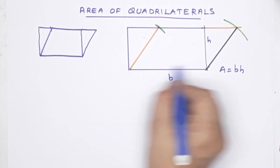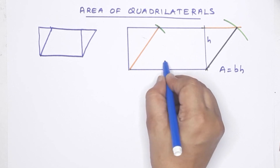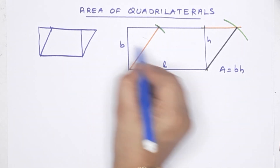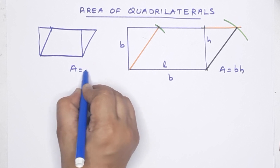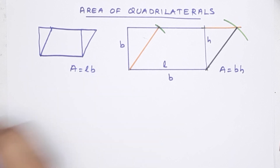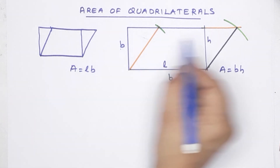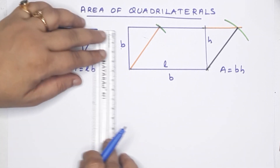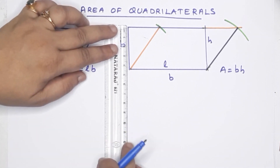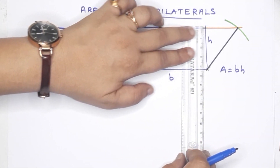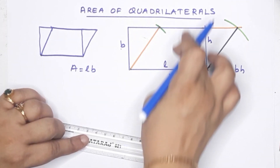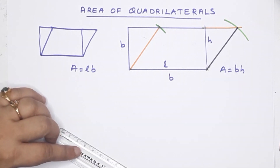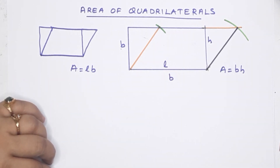What is the rectangle? This length is the length. This rectangle has area equal to L into B. This side is parallel. That is the same area we have constructed.